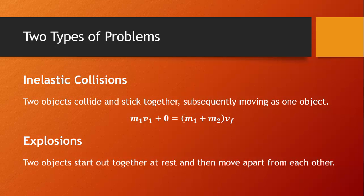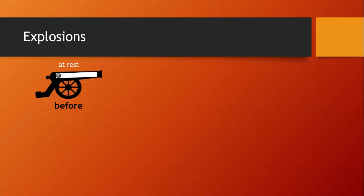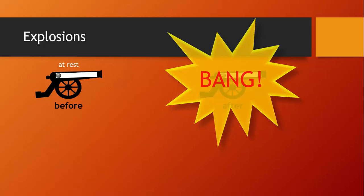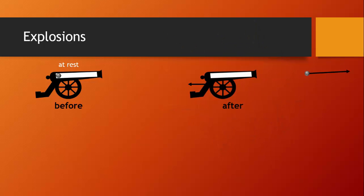Now let's move on to explosions. Here we have a cannon and a cannonball that are both at rest — the cannon is sitting at rest on the ground and the cannonball is sitting at rest inside it. We're going to light the fuse and fire the cannonball. The cannonball has some velocity to the right, and the cannon has what we call a recoil velocity to the left. We can use the law of conservation of momentum to figure out that recoil velocity.